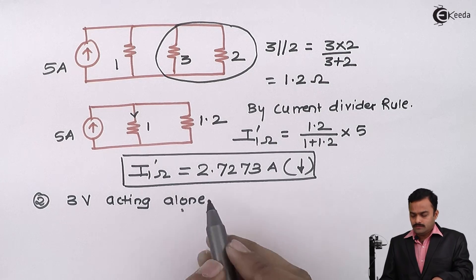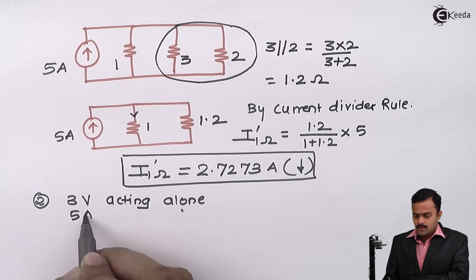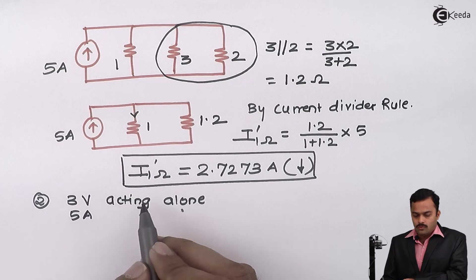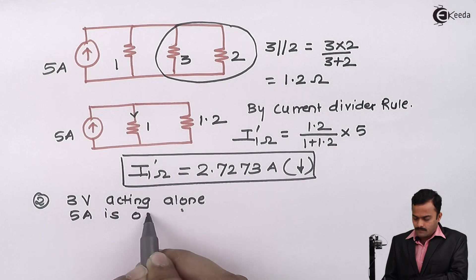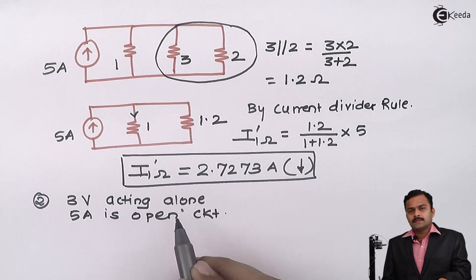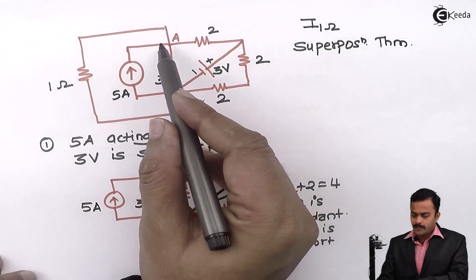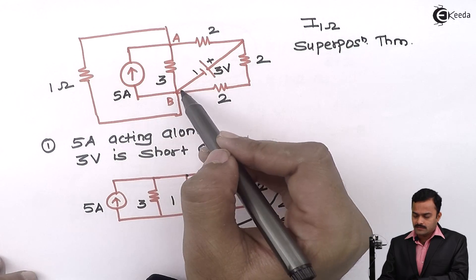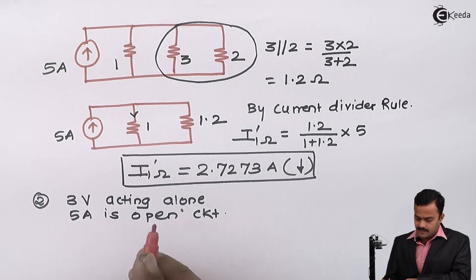If 3 volt is acting alone, then what to do for this 5 ampere current source? Being a current source, I need to open circuited. So 5 ampere is open circuited. Considering this modification in the original circuit where I am removing this 5 ampere and 3 volt is acting alone, the structure I will get is like this.